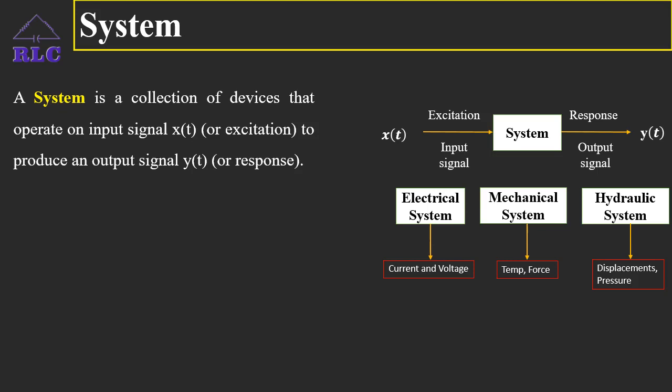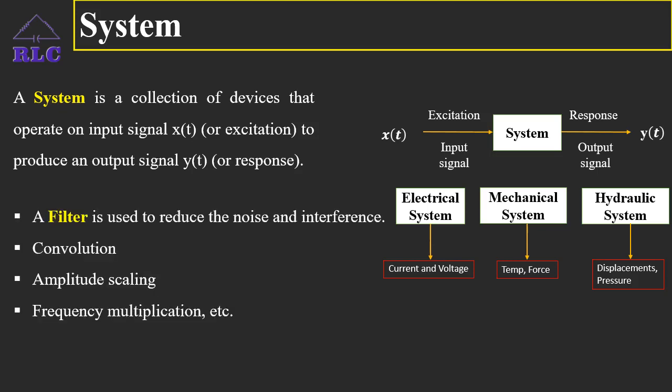What are the different operations that are performed by a system? Some of the operations are filtering — a filter is a system which performs filtering operation to reduce noise and interference on the information-carrying signal. Some other operations are convolution, amplitude scaling, time shifting, frequency multiplication, etc. These are some of the operations that are performed by a system on a signal.